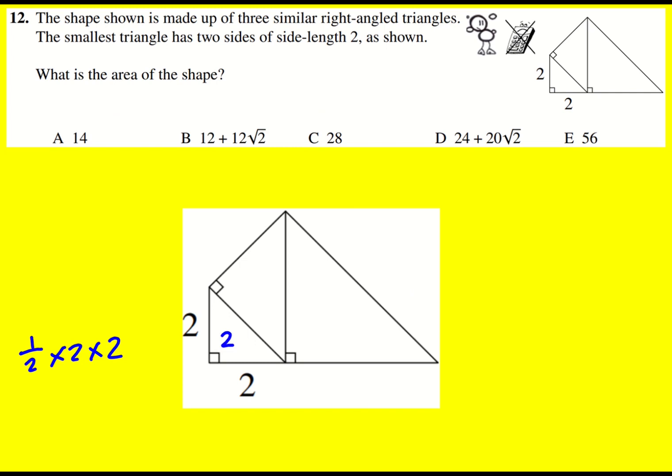But now I need to find the bases of the other ones. So I'm going to need to apply Pythagoras' theorem to get this length here. It's going to be 2 squared plus 2 squared square rooted which gives me root 8.